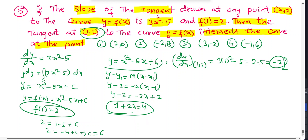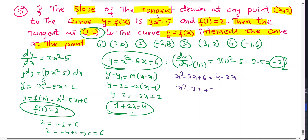Finding intersection of tangent y = 4 - 2x with curve y = x³ - 5x + 6: x³ - 5x + 6 = 4 - 2x, so x³ - 3x + 2 = 0. Since x = 1 satisfies this, (x - 1)(x² + x - 2) = (x - 1)(x - 1)(x + 2) = 0. So x = 1 (given) or x = -2.